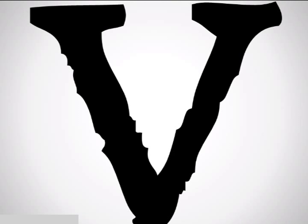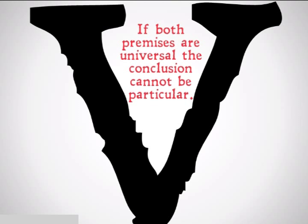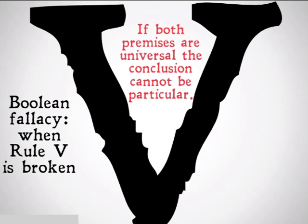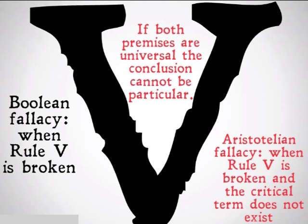The existential fallacy for syllogisms is a fallacy for rule number five of categorical syllogisms: if both premises are universal, the conclusion cannot be particular. Rule five only really applies to Boole. The Boolean version of the existential fallacy is whenever rule five is broken. However, the Aristotelian version is when rule five is broken and the critical term in that syllogism does not exist.